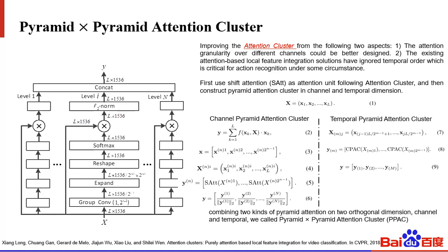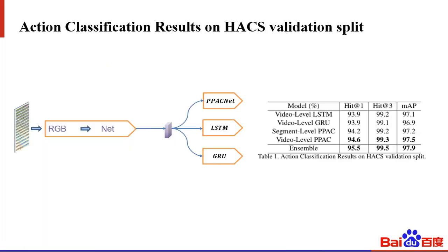With L2 normalization, we obtain the final output. We split the feature sequence in the temporal dimension and apply CPAC to each sub-sequence separately. Combining these two kinds of pyramid attention on two different dimensions, we call it the Double Pyramid Attention Cluster — DPACnet. Since we obtained snippet network features, we can use LSTM, GRU, and DPACnet for final classification by temporal modeling.